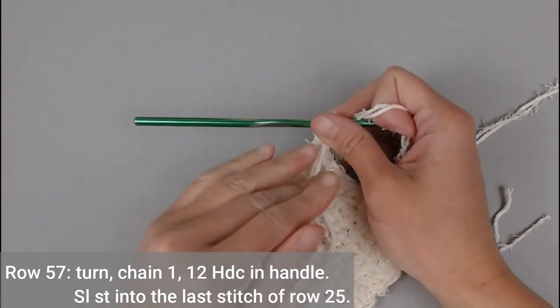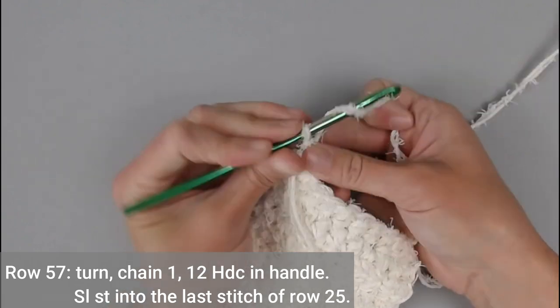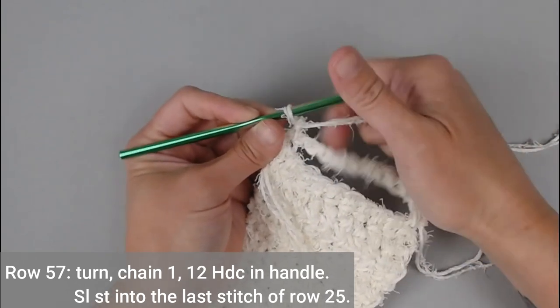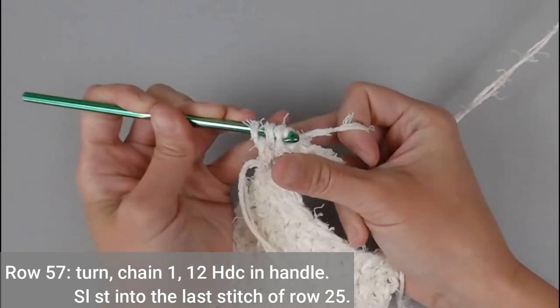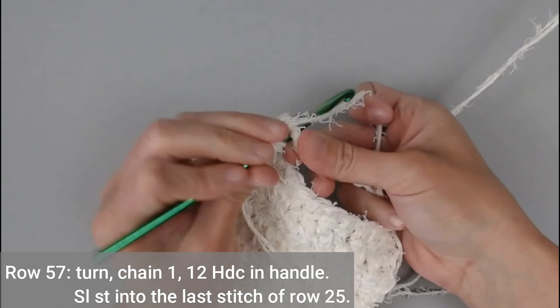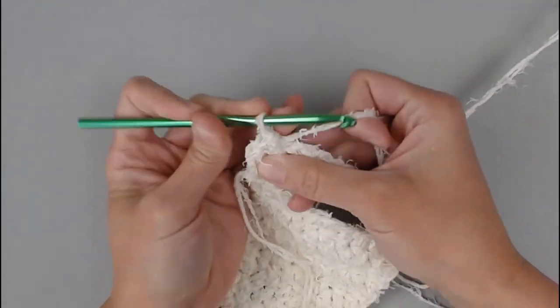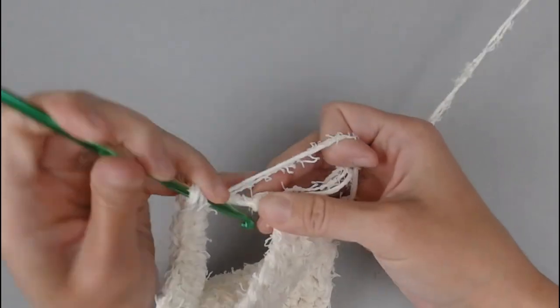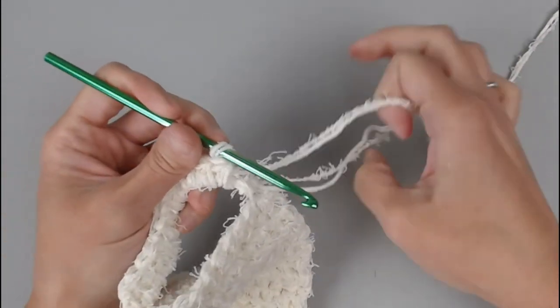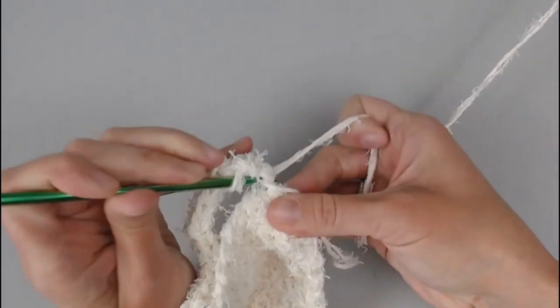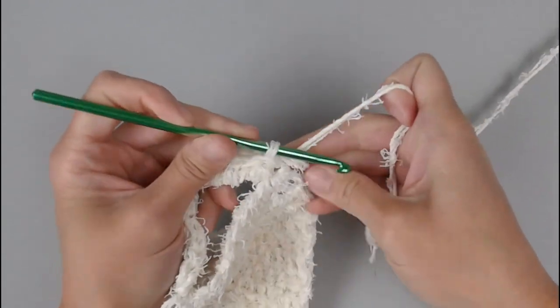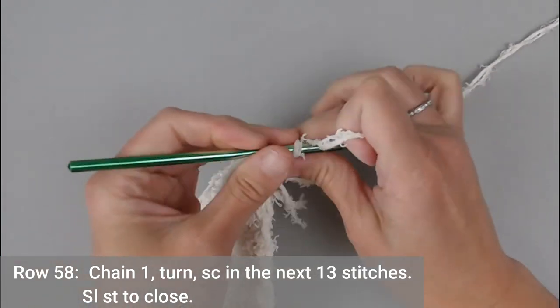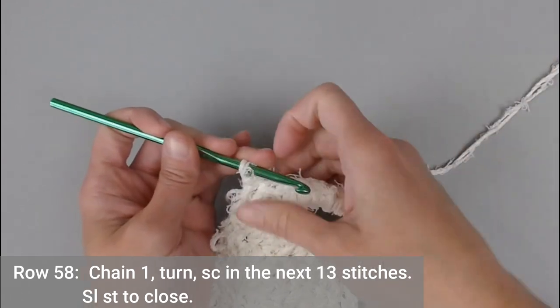We are now on row 57 in the pattern. We're going to chain one. We're going to make 12 half double crochets in the handle or in this chain 10 space. Slip stitch back into row 58.